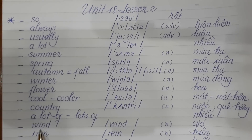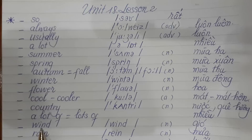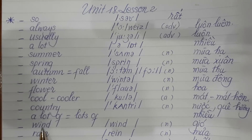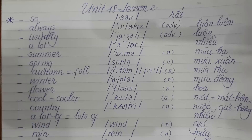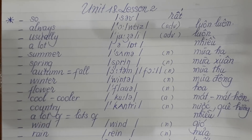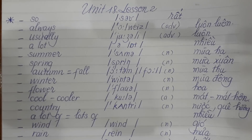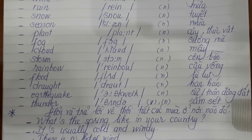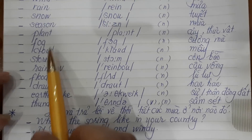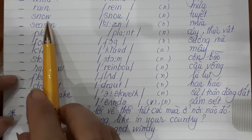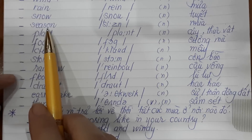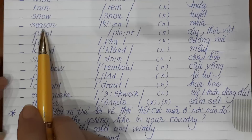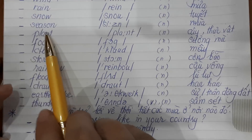Wind — danh từ nhé — danh từ gió. Bài trước thì các em có học là 'windy' là có gió — đó là tính từ — còn đây nó là danh từ nhé. Rain — mưa nhé. Snow — tuyết. Season — mùa. Mùa gì đó trong năm — ví dụ như là mùa xuân, mùa hạ.